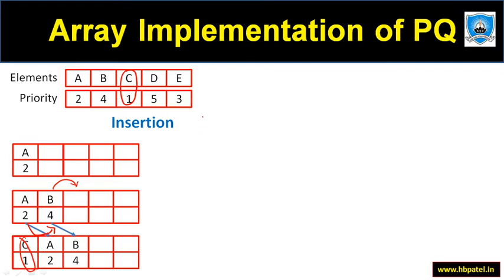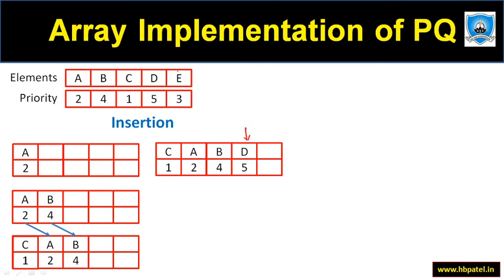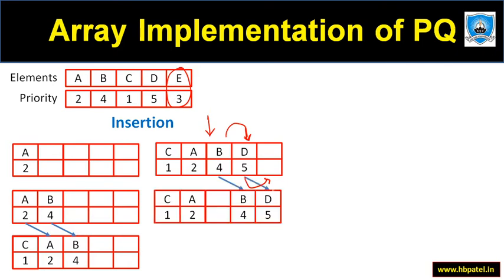Next is D with priority five, which is the lowest priority, so it is added at the end. Then E comes with priority three, which goes somewhere in between. To insert it in the correct position I need to shift elements to create space, then place E with priority three in the correct location. This is how we insert elements with different priorities into the queue.